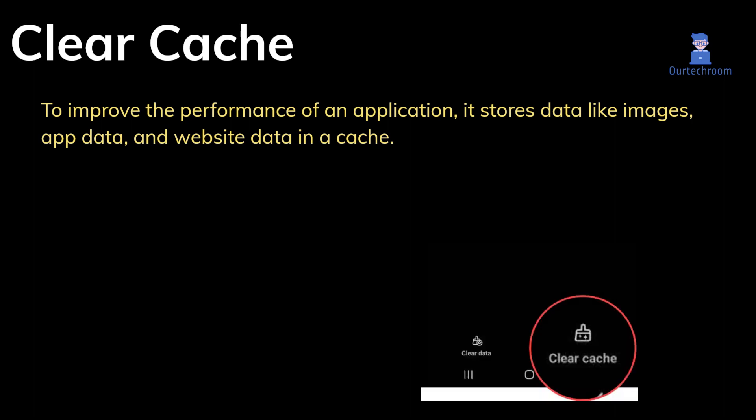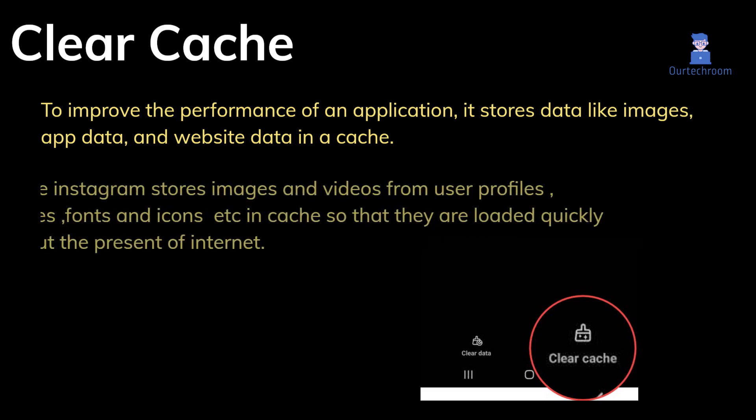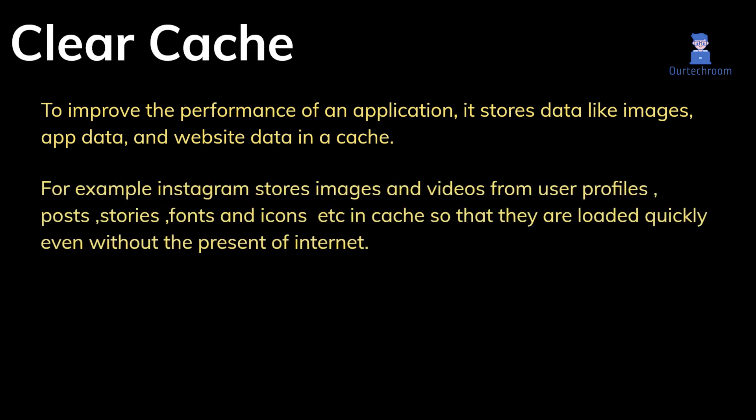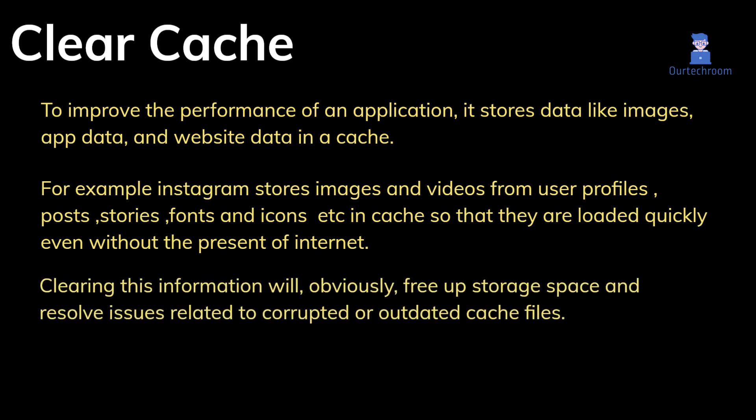For example, Instagram stores images and videos from user profiles, posts, stories, fonts, and icons in cache so that they are loaded quickly even without the presence of internet. Clearing this information will obviously free up storage space and resolve issues related to corrupted or outdated cache files.